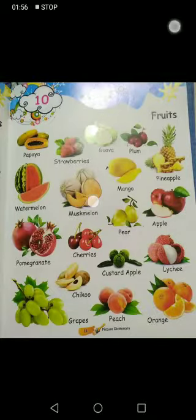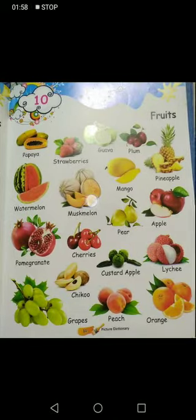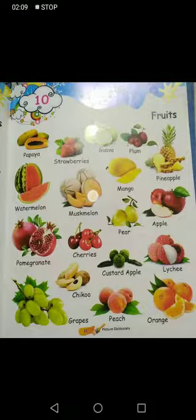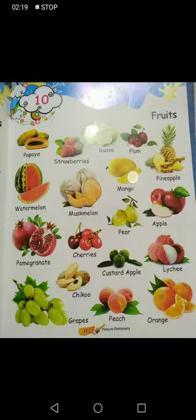Next is M-U-S-K M-E-L-O-N, Musk melon. Musk melon means karbuja. Next is Mango. Mango means aam. You all eat so many mangoes, don't you?